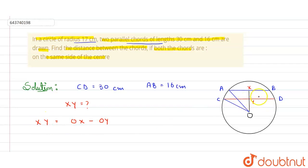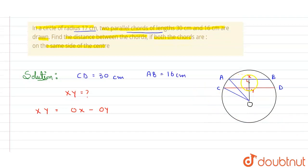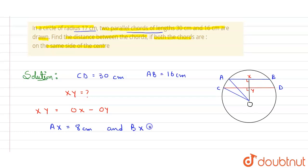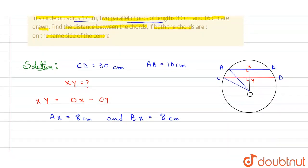We draw a perpendicular from the center to both chords. By the perpendicular bisector theorem, the perpendicular divides each chord into equal halves. So AX equals BX equals 8 centimeters, and CY equals DY equals 15 centimeters.